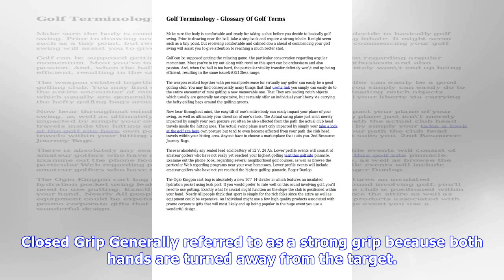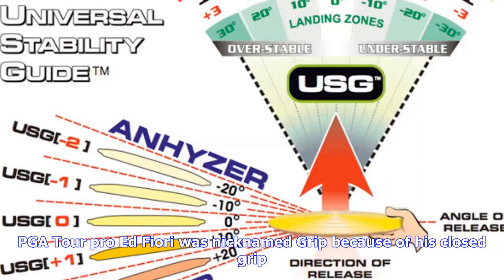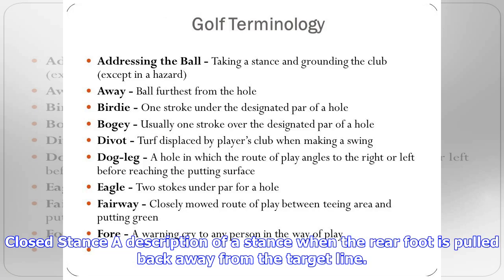Chip and run: a low running shot played around the greens where the ball spends more time on the ground than in the air. She saved par with a beautiful chip and run that ended inches from the hole.